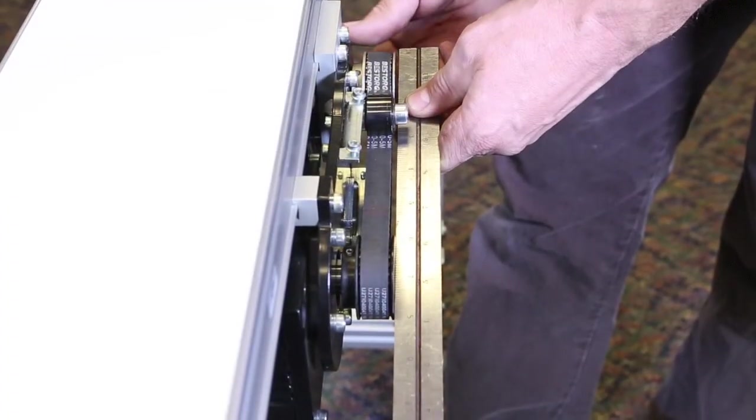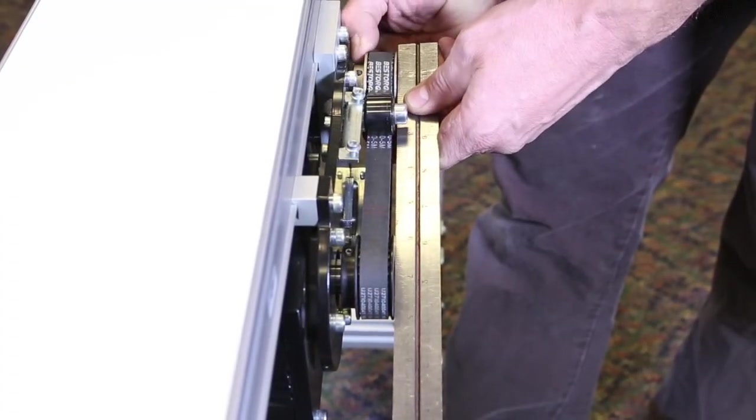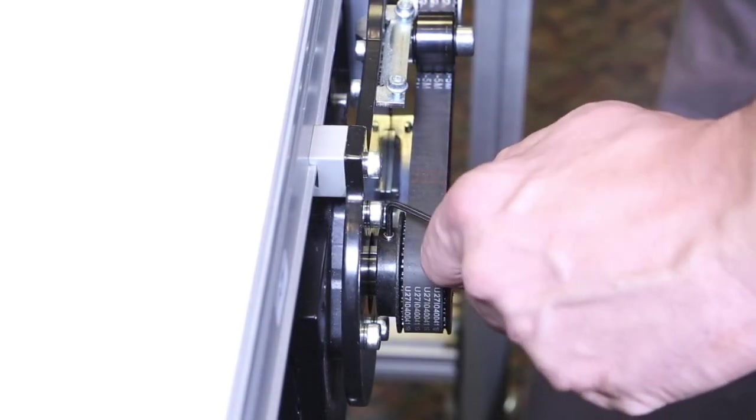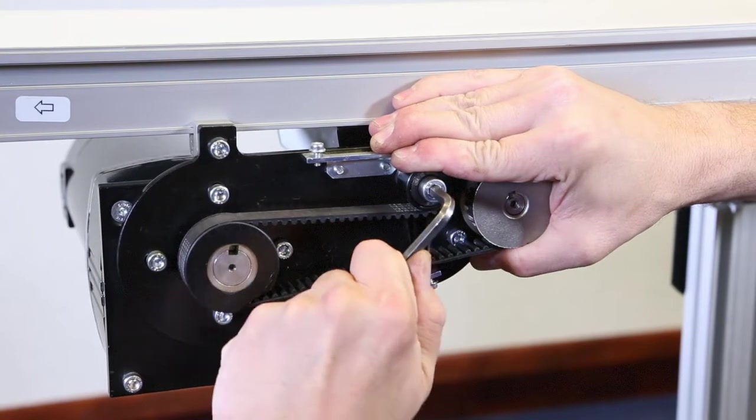Using a straightedge, ensure the drive pulley is aligned with the driven pulley. Next, tighten the set screws on both pulleys and tension the timing belt tensioner.